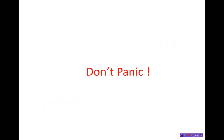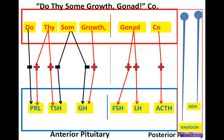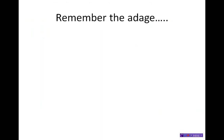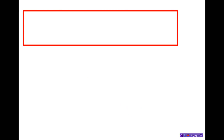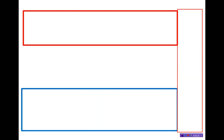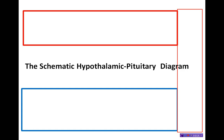Here's the finished product — don't panic, we won't stay on this that long. Remember the adage: see one, do one, teach one. It may take a couple of practices before you want to teach one, but it certainly is easy. Let's first orient ourselves to the three rectangles and see what they represent anatomically. This is my schematic hypothalamic pituitary diagram.